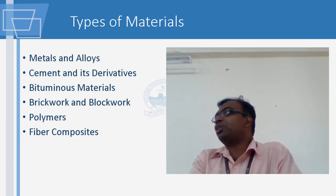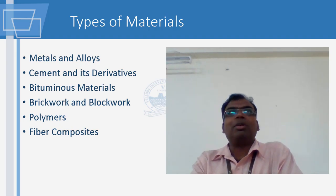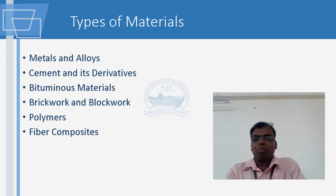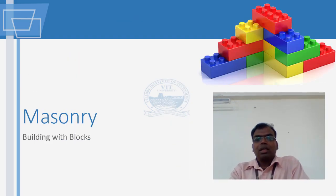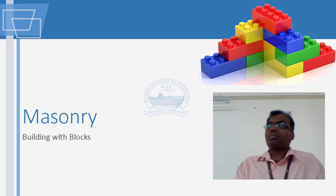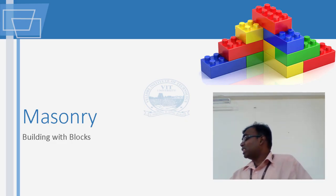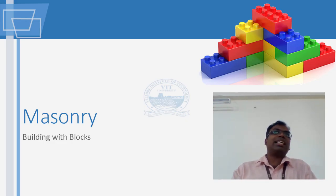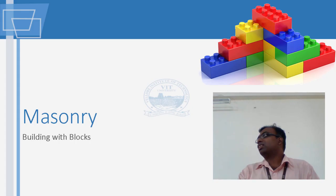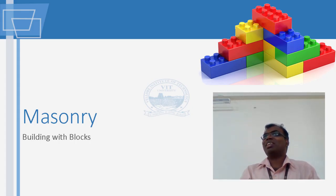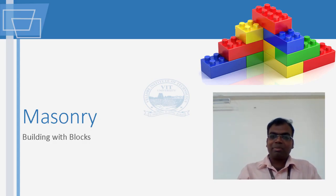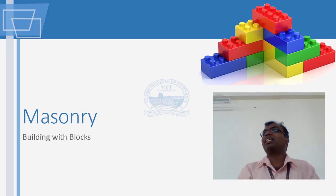Then there are cement and its derivatives. Bituminous materials - things made of tar - are used for road material, sealing materials, and jointing materials. Polymers: we talked a lot about polymers and fiber composites. Now I am coming to masonry.